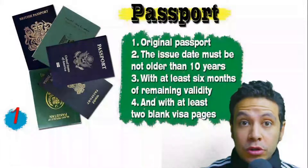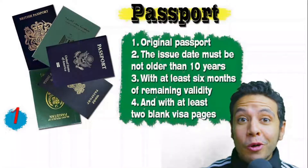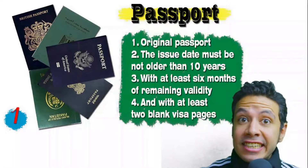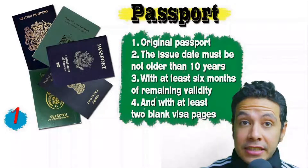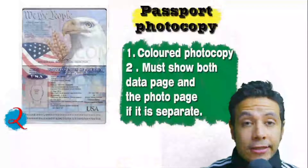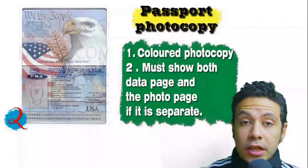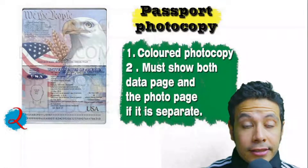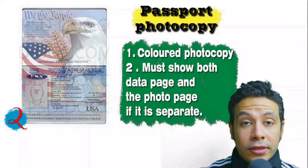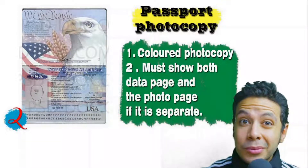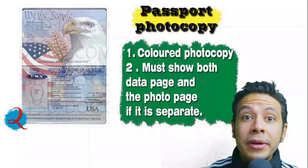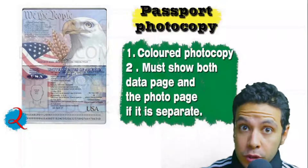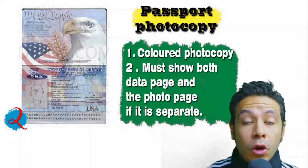What are the required documents you will need while applying for a visa? Speaking about your passport: it must be original, must not be older than 10 years, with at least six months of remaining validity and at least two blank visa pages for stamps. In many cases you will also need a passport photocopy — it might be one copy or more, preferred to be colored with both the data page and photo page showing.